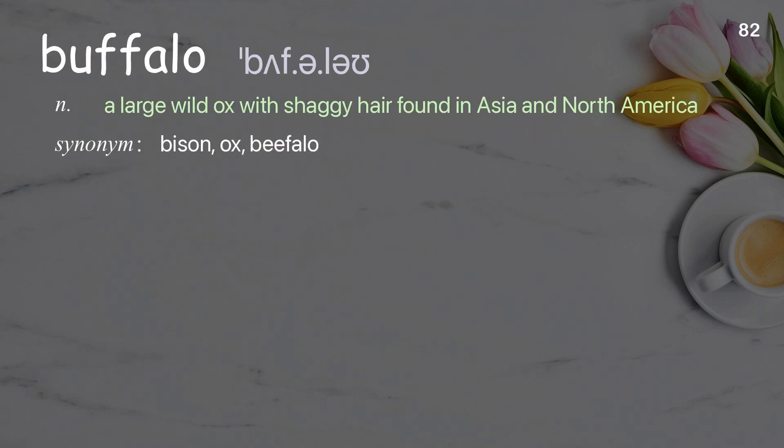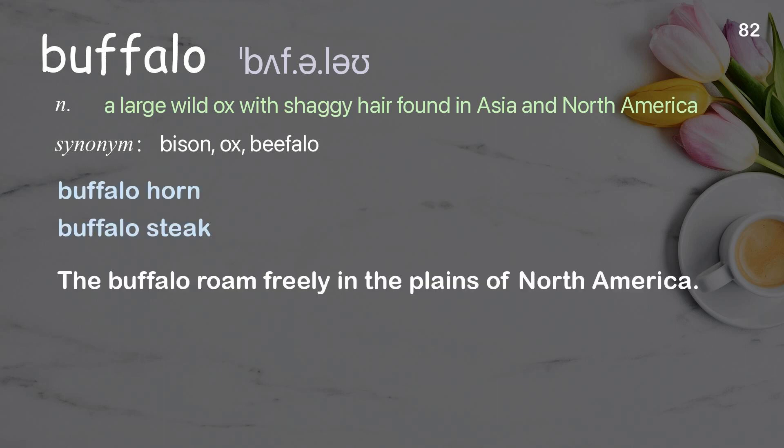Buffalo: a large wild ox with shaggy hair found in Asia and North America. Examples: buffalo horn, buffalo steak. The buffalo roamed freely in the plains of North America.